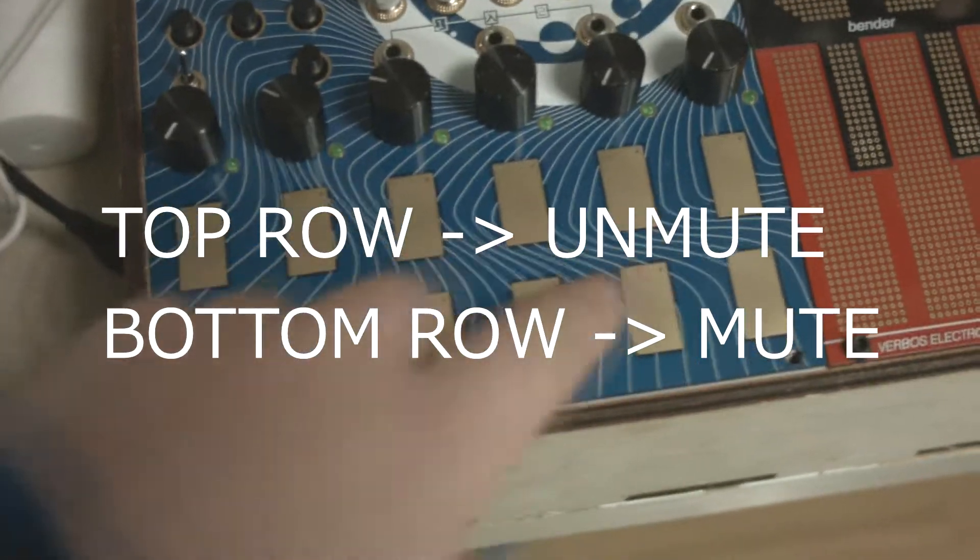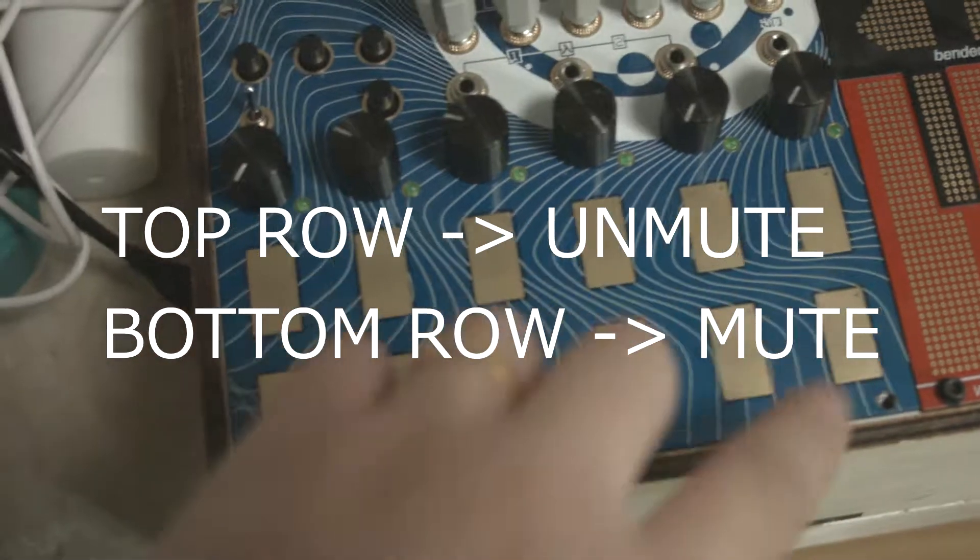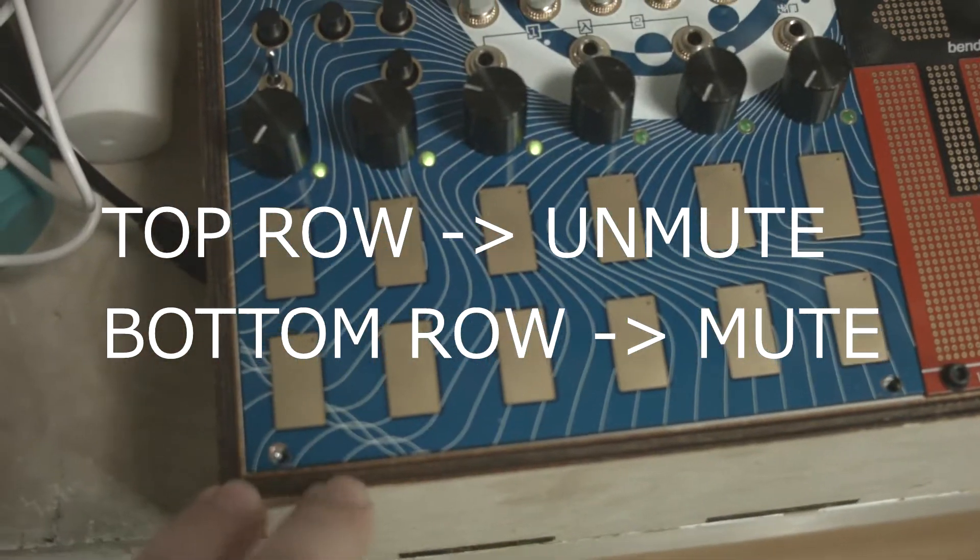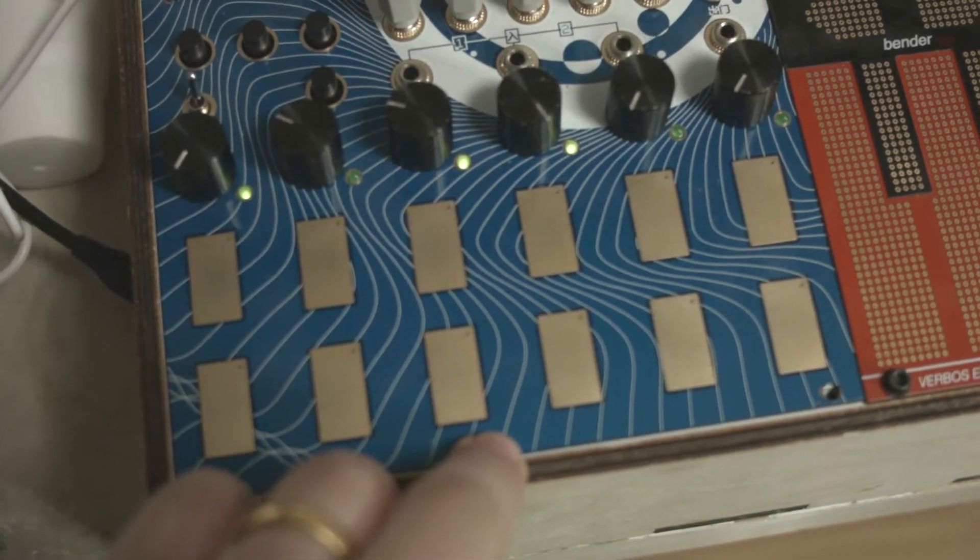You can use the pads to mute and unmute the tracks. The upper row unmutes them and the lower row mutes them.